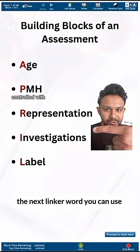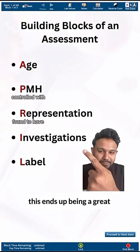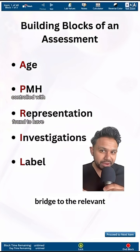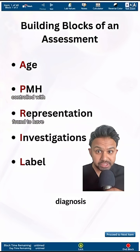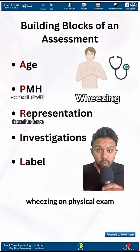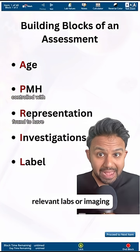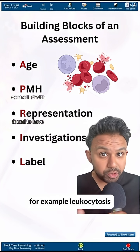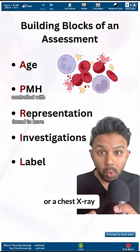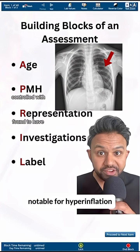The next link or phrase you can use is 'found to have.' This ends up being a great bridge to the relevant investigations related to the diagnosis — for example, wheezing on physical exam. You can also include relevant labs or imaging that would support the diagnosis, such as leukocytosis or a chest x-ray notable for hyperinflation.